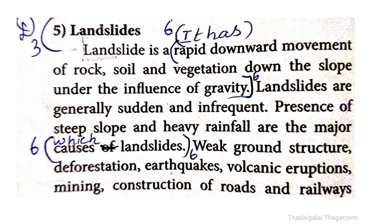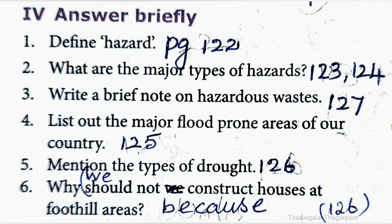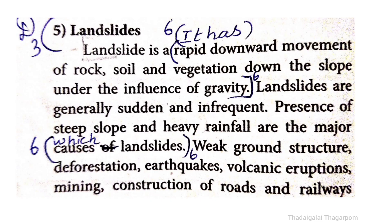We should not construct houses at foothill areas because it has rapid downward movement of rock, soil, and vegetation down the slope under the influence of gravity, which causes landslides.